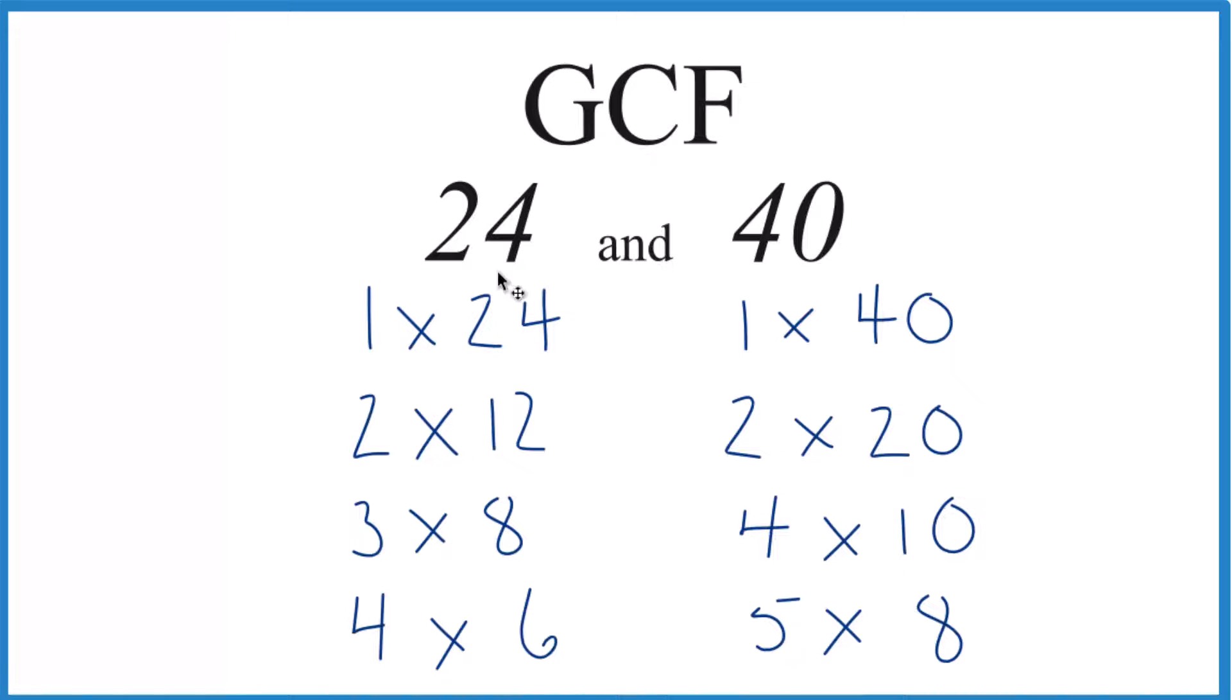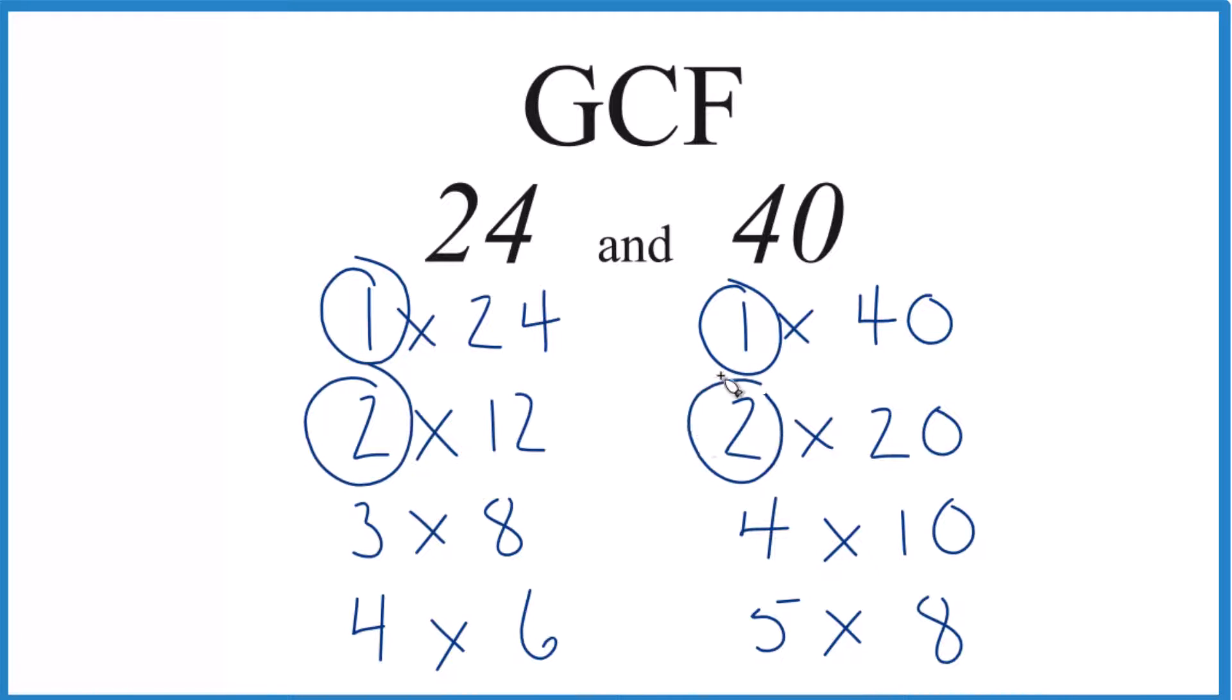So let's find what's in common here. Well, 1 goes into 24 and 40 evenly. That's a common factor. 2, 3, no, but 4. 4 goes into 24, 4 goes into 40.